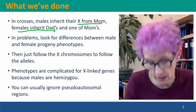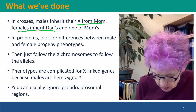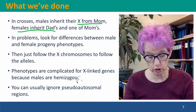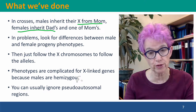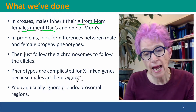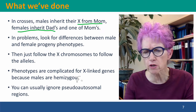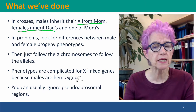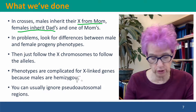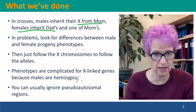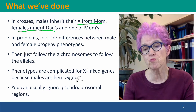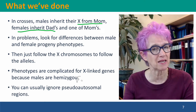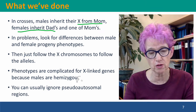Phenotypes for X-linked genes are complicated because males are hemizygous — they only have one X chromosome. This was discussed in Module 4, Lecture 4e. You may be wondering about pseudo-autosomal regions from Module 7 — for now, you should generally ignore pseudo-autosomal regions in conventional genetic analysis problems, unless the question itself gives you hints that you should consider them.